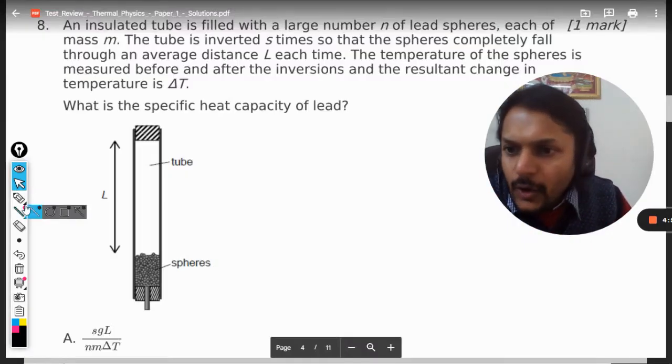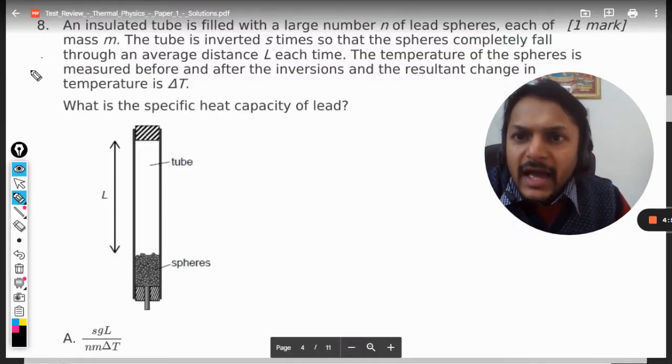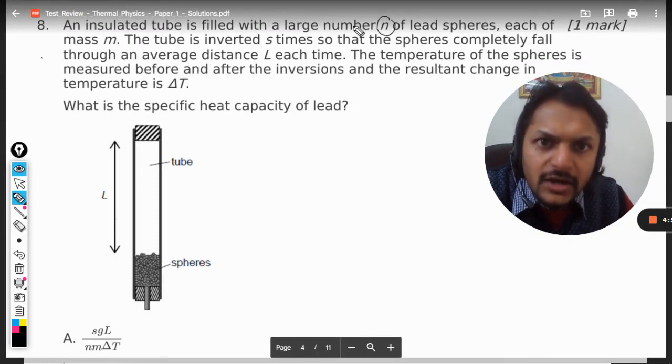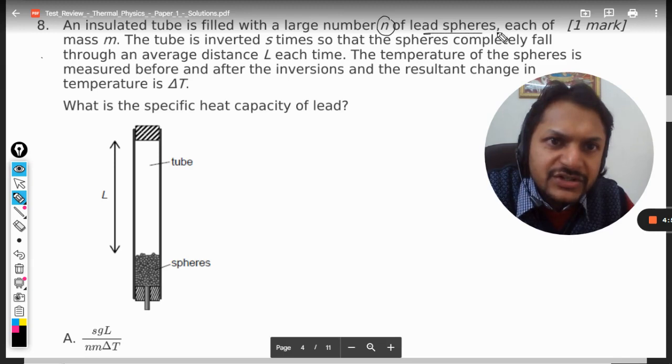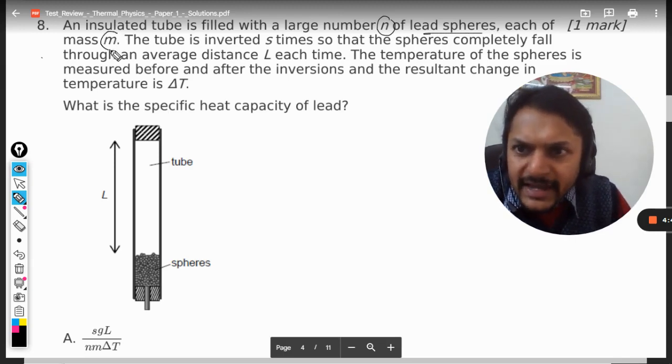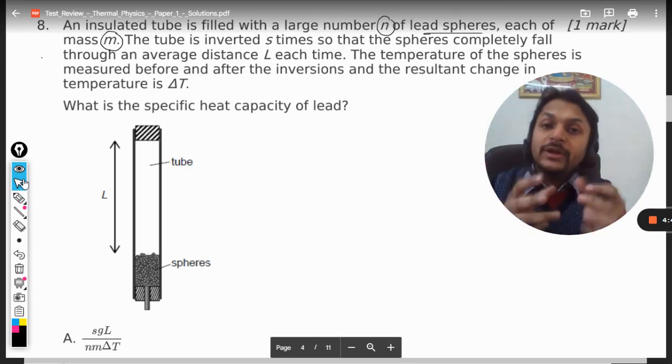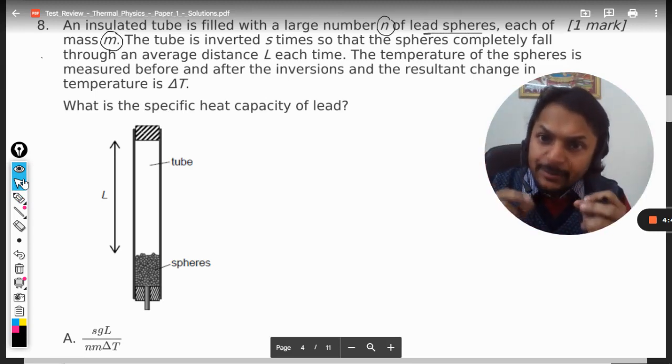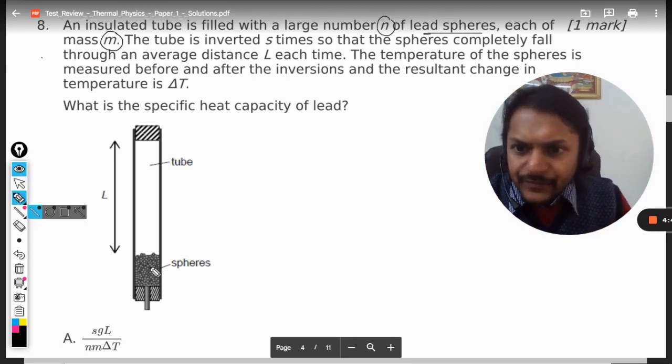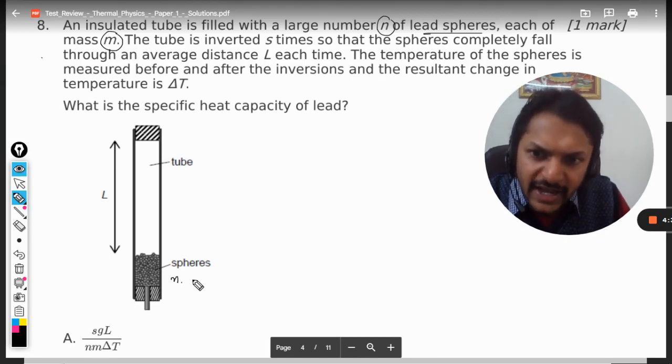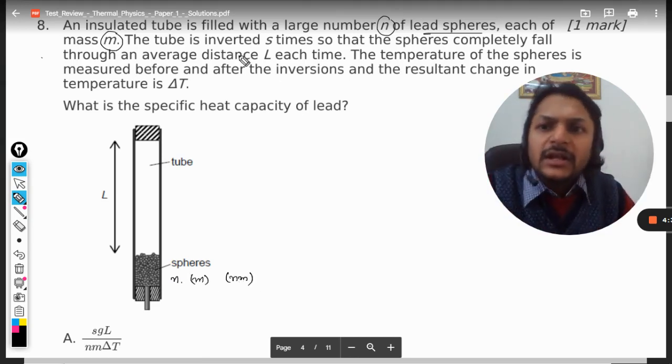Okay, dear students, let's see how we're going to do this question. An insulated tube is filled with a large number n of lead spheres, each of mass m. So there's a tube and there are many lead spheres packed there - n number of spheres - and m is the individual mass, so the total mass can be taken as n multiplied by m.